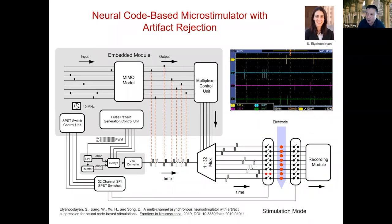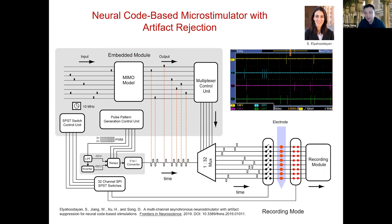In our approach, when we generate neural codes, sending those codes back to the brain is non-trivial. You cannot have a large number of independent stimulators — that consumes a lot of power and computation. So we developed a multiplexer-based neural code microstimulator with artifact suppression. What we really want is not only the behavioral outcome, but also the electrophysiological feedback to monitor the stimulation and make sure we are stimulating the right region and generating the right response. Artifact rejection and neural code asynchronous stimulation are both important for this type of application.